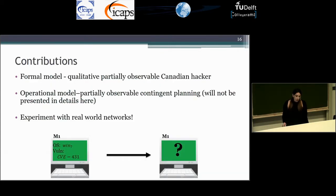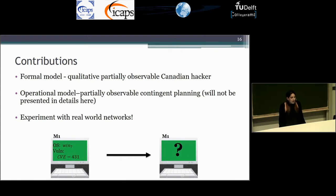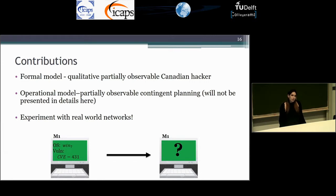So in our paper we suggested two models: the formal model based on the Canadian Hacker problem, and the operational model based on contingent partial observable planning. We also conducted our experiments over real network data.